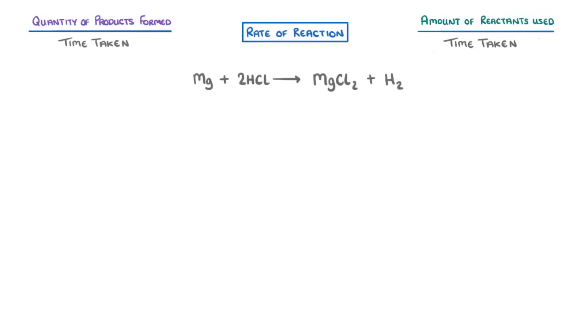For example, if this reaction between magnesium and hydrochloric acid produced 1200 cm³ of hydrogen in 4 minutes, then our rate would be equal to 1200 over 4 times 60, or 240. So it would be 5 cm³ per second.